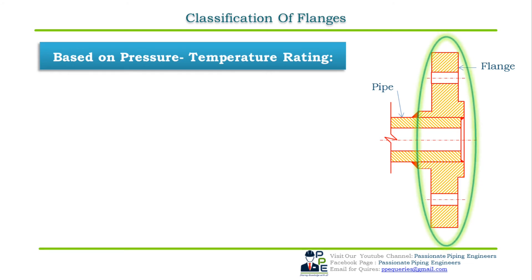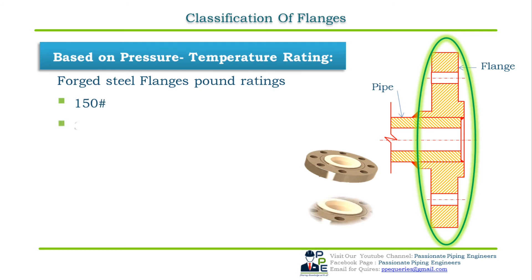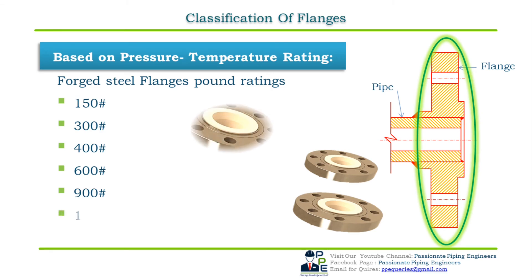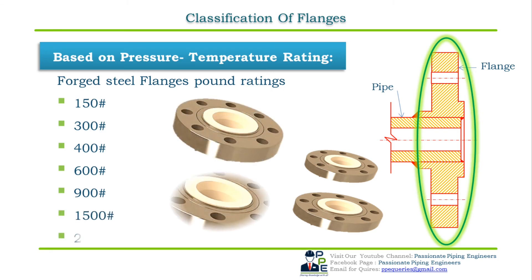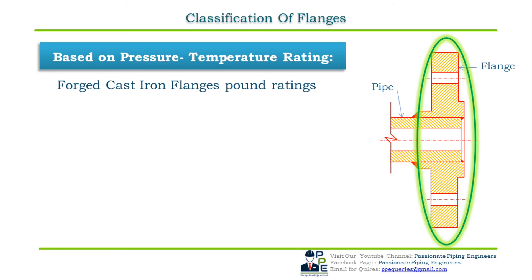Based on pressure-temperature rating: the pressure-temperature rating chart in ASME B16.5 specifies the non-shock working gauge pressure to which the flange can be subjected at a particular temperature. Pressure class or rating for flanges is given in pounds. Forged steel flange pound ratings are: 150, 300, 400, 600, 900, 1500, and 2500. Forged cast iron flange pound ratings are: 25, 125, 250, and 800.